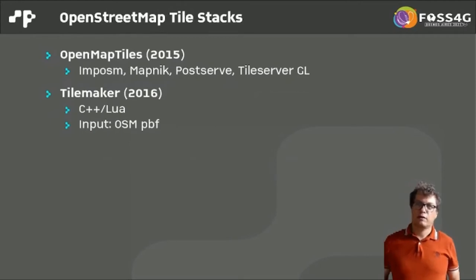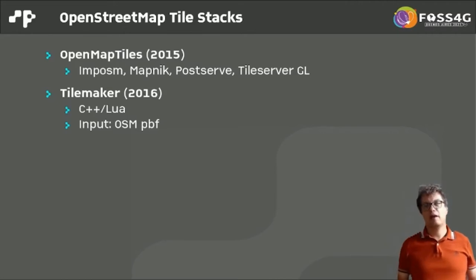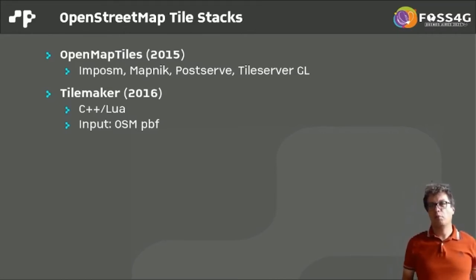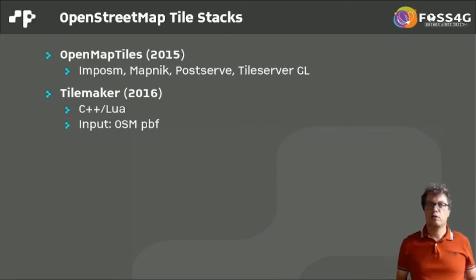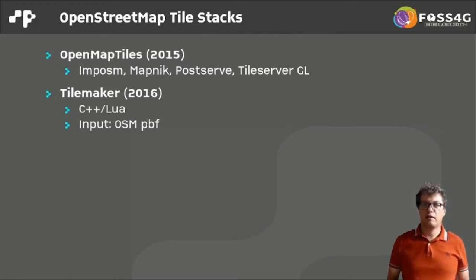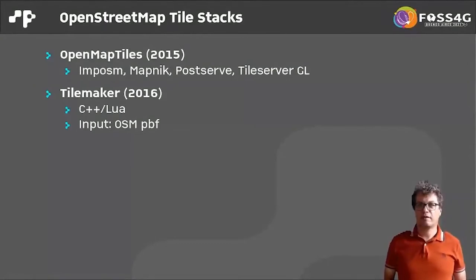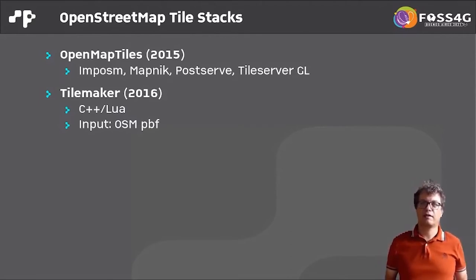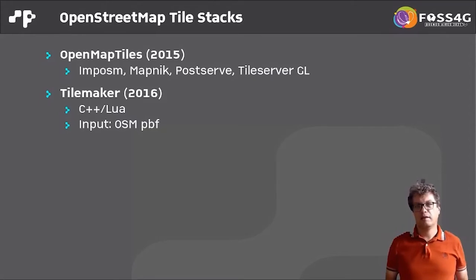The next section covers OpenStreetMap tile stacks, optimized for creating vector tiles from OSM data. OpenMapTiles started in 2015 under another name; it's based on Imposm for importing into PostGIS, uses Mapnik for rendering, PostServe for the tiles, and TilesGL for raster tiles. A second software — not a stack but a single application written in C++ — is TileMaker, published in 2016, which reads directly from OSM files and creates vector tiles as PBF files or MBTiles.